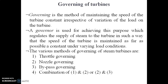The governor regulates the supply of steam to the turbine in such a way that the speed of the turbine is maintained as nearly constant as possible under varying load conditions. There are various methods of governing: first is throttle governing, second is nozzle governing, third is bypass governing, and fourth is a combination such as throttle and nozzle governing, or bypass and nozzle governing.